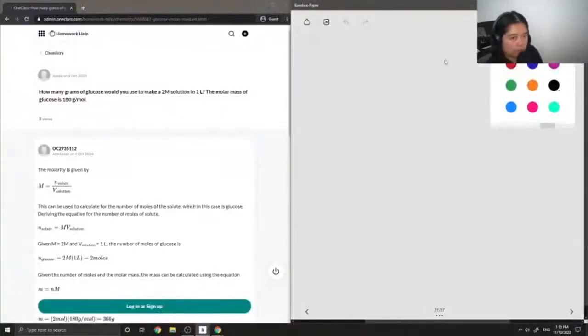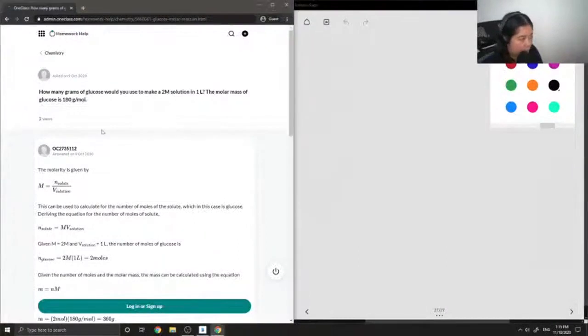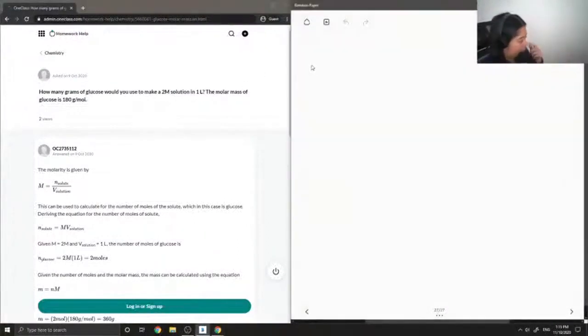Okay, so moving on to question number 10. How many grams of glucose would you use to make a 2 mole per liter solution in 1 liter? The molar mass of glucose is 180 grams per mole.